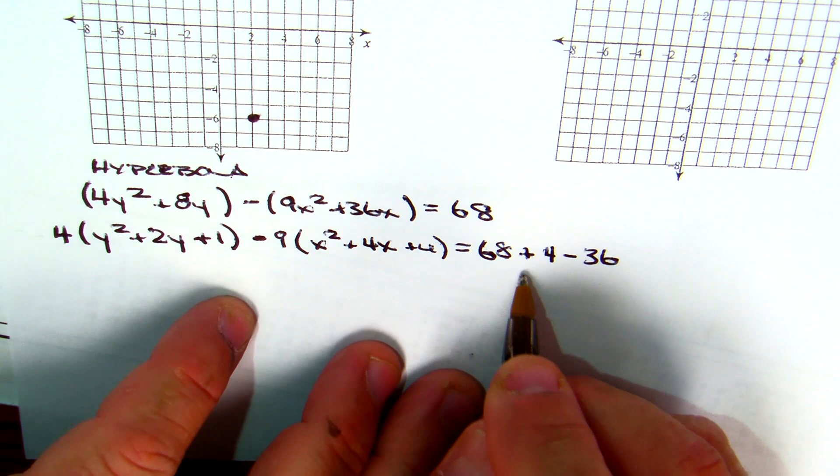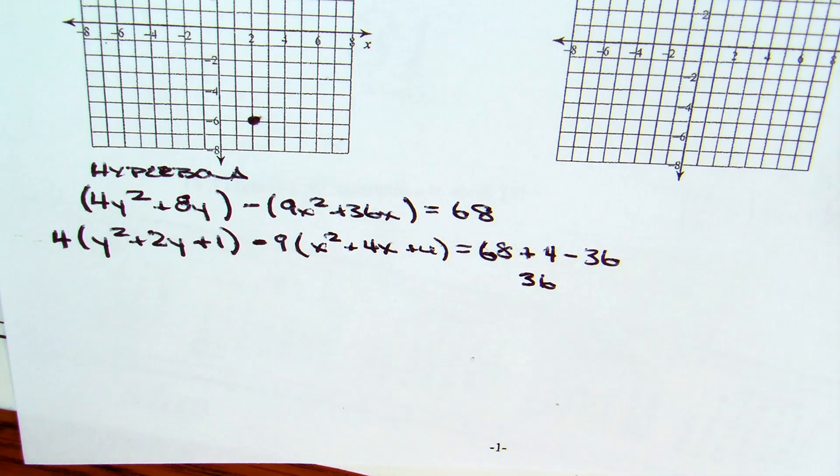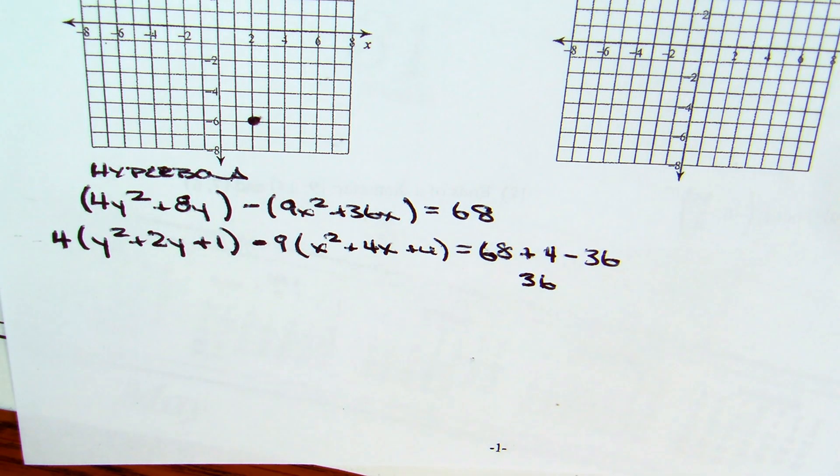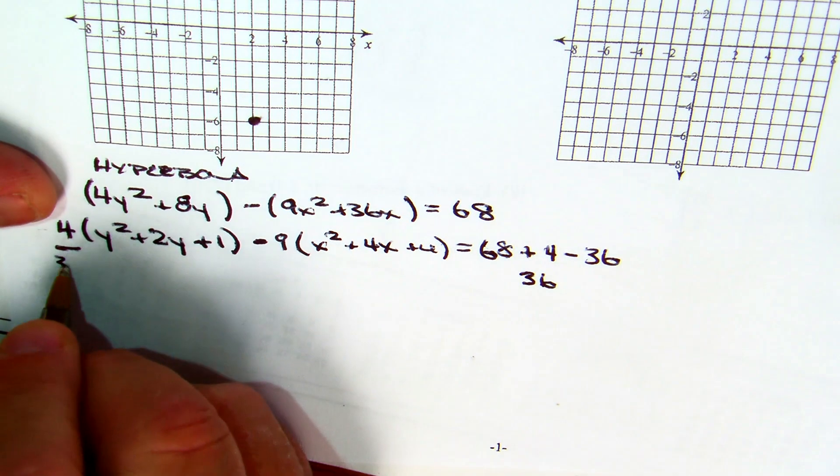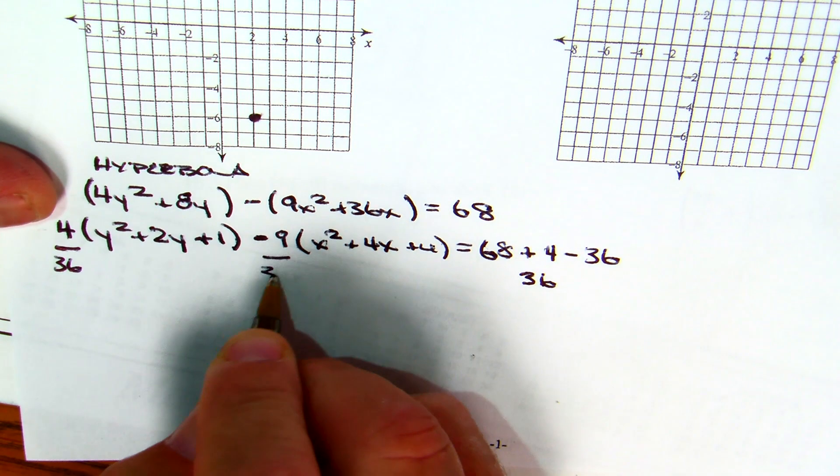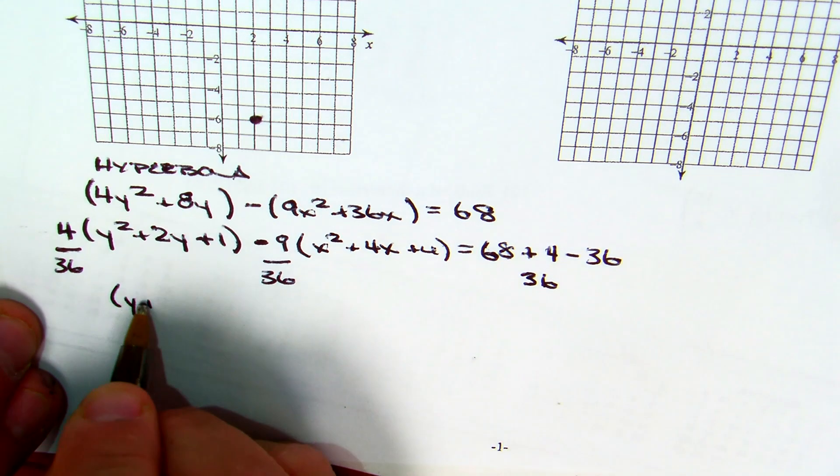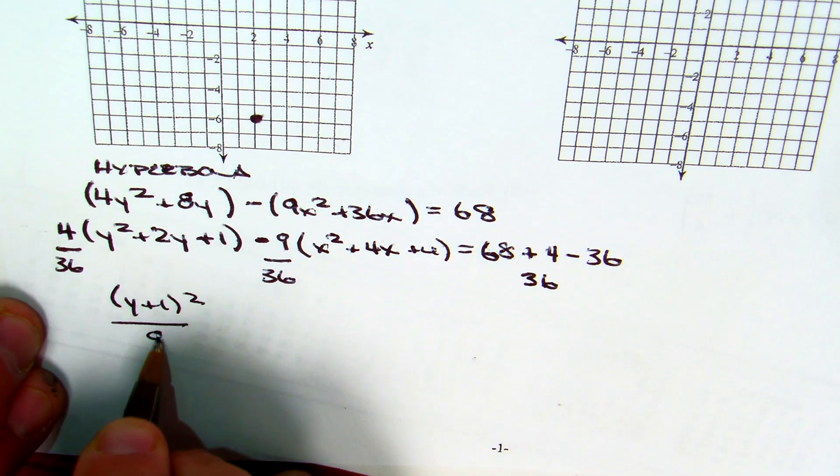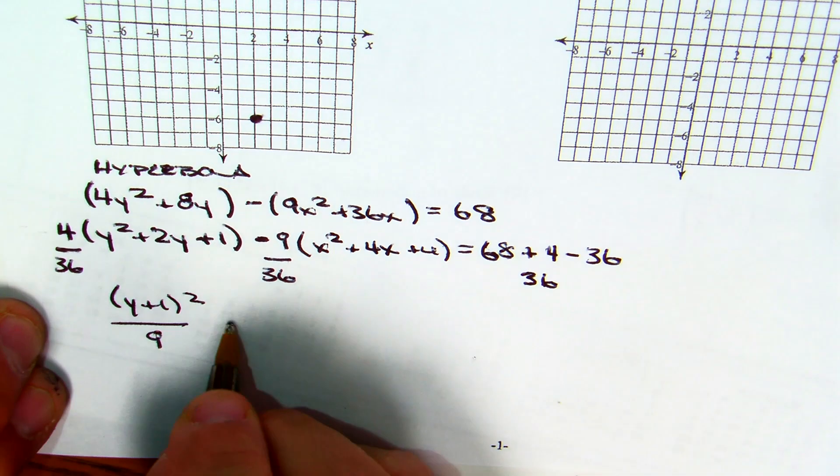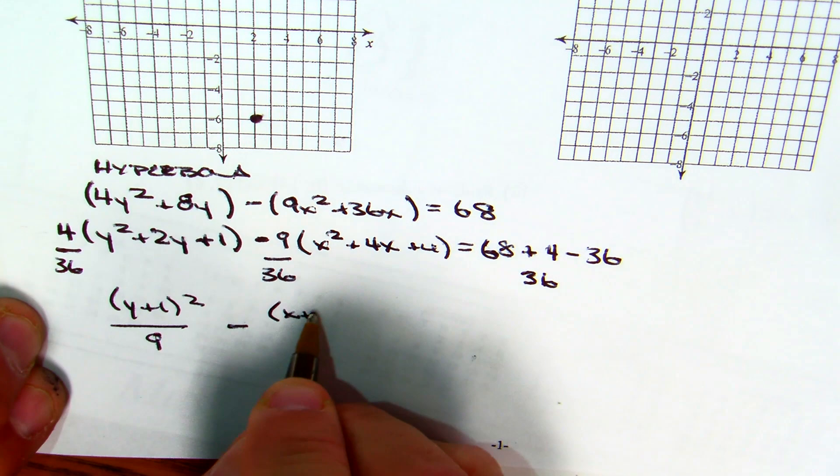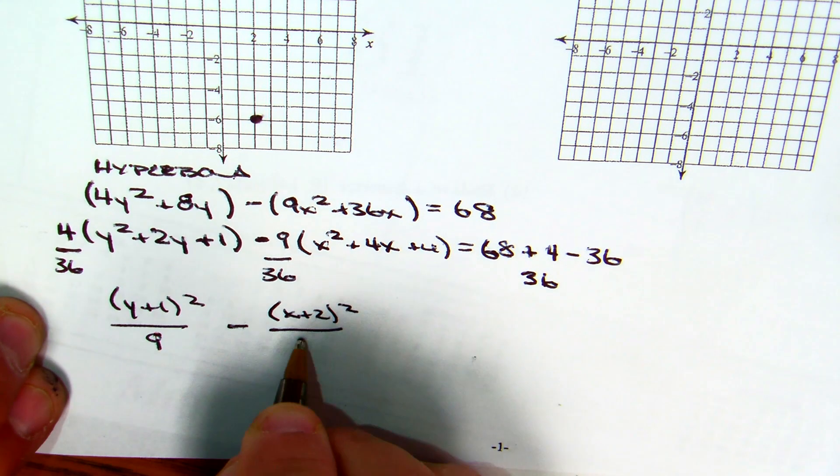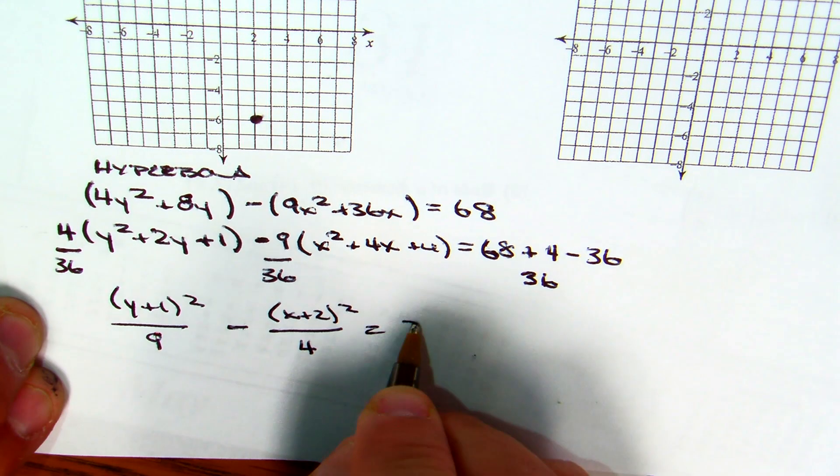When I put these together, I got 36. But I need that to be 1. So, what am I going to divide both sides by? 36. That's going to give me y plus 1 squared over 9 minus x plus 2 squared over 4 equals 1.